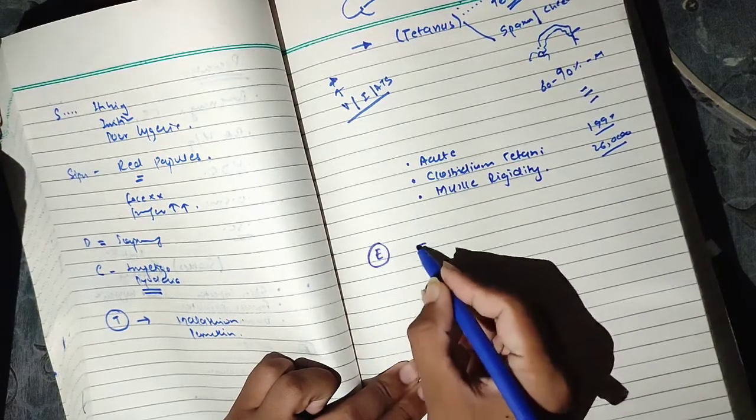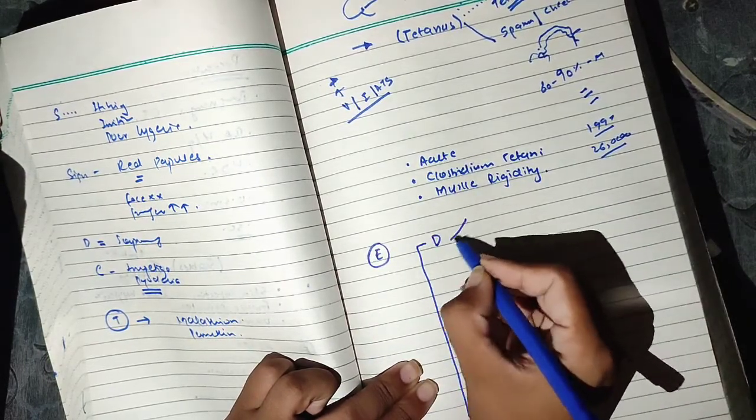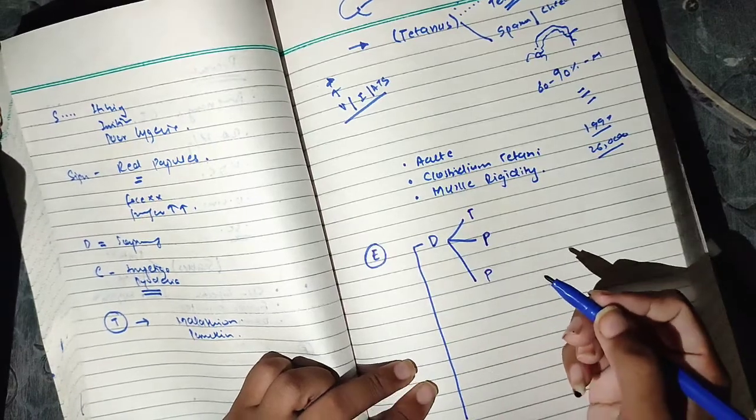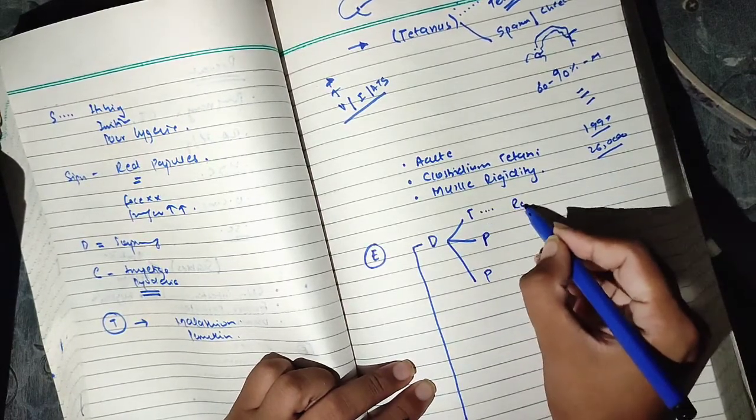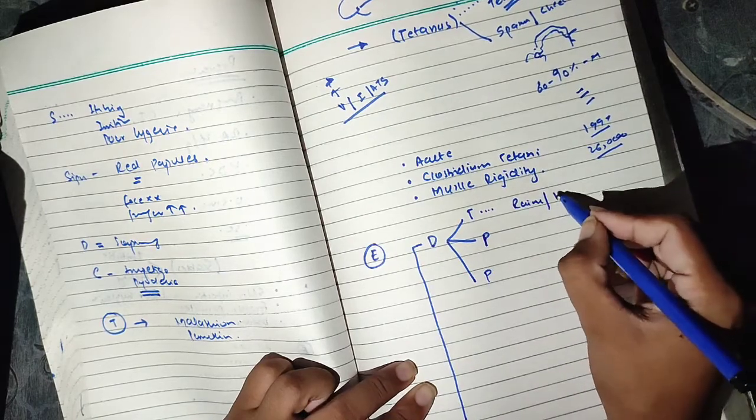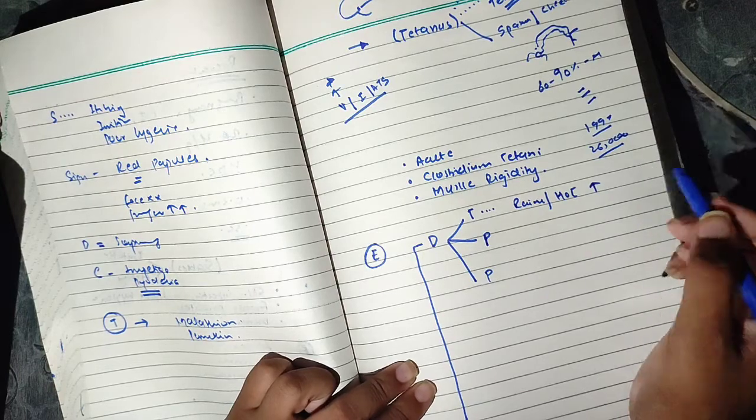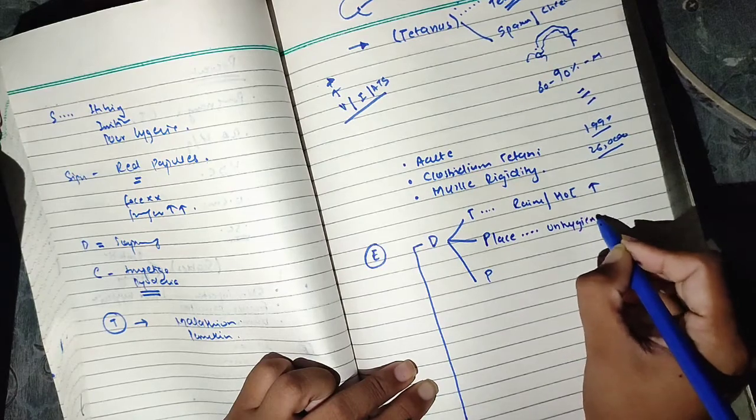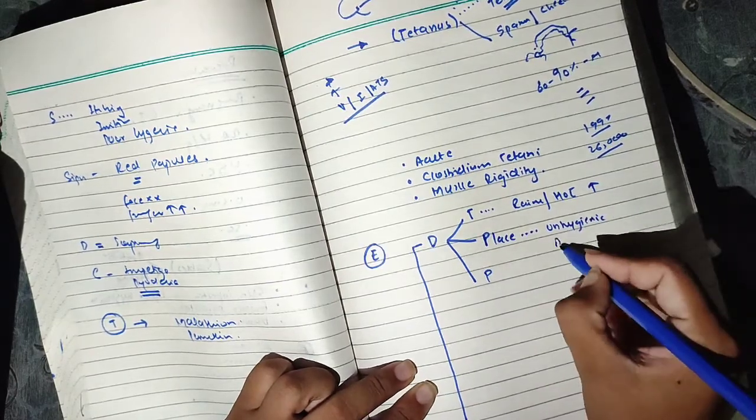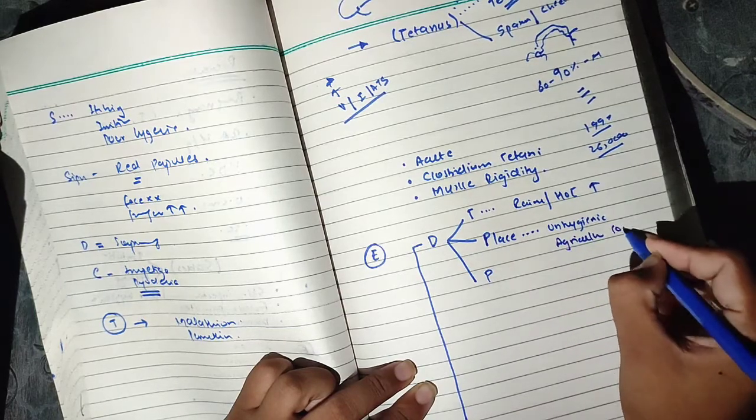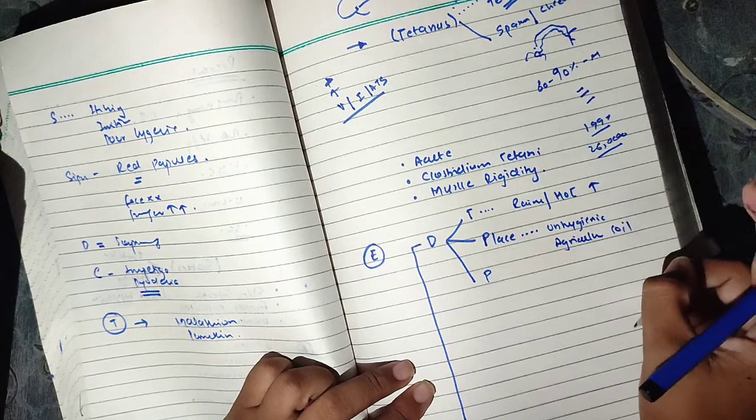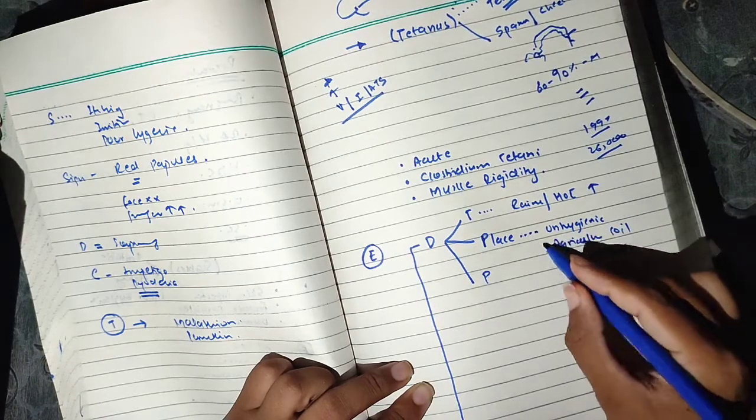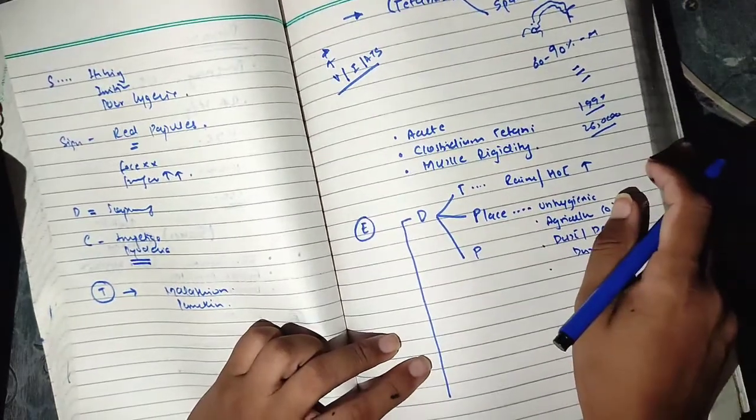Now we will discuss the epidemiological factors. In distribution, we will see three things: time-wise, place-wise, and person-wise. If we talk about time-wise, we see that cases come throughout the year, but in rainy and hot season, cases are more common. If we talk about place-wise, unhygienic conditions are where it will happen most. Agricultural soil, where it's in the ground, places near animals, where there's dust, debris material, or dung. These are places where it can be present. And where there are no primary health care services, risk is very high.